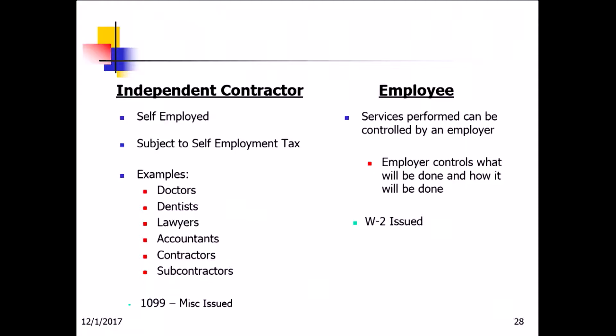There's a distinct difference between the two. Employees' services are performed and controlled by an employer — the employer controls what will be done and how it will be done, and W-2s are issued. For independent contractors, they're usually self-employed and subject to self-employment tax. Examples include doctors, lawyers, dentists, accountants, contractors or subcontractors, and they receive 1099s.